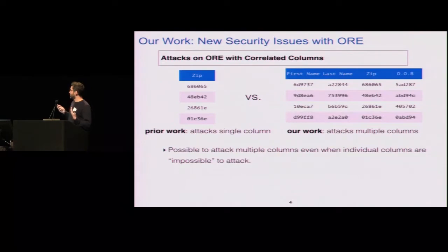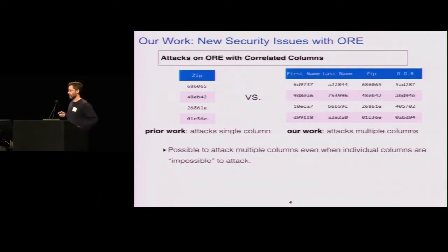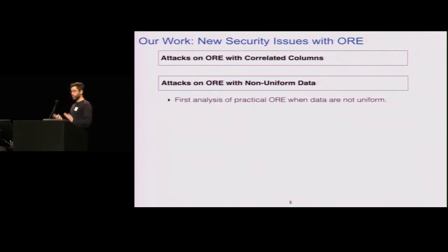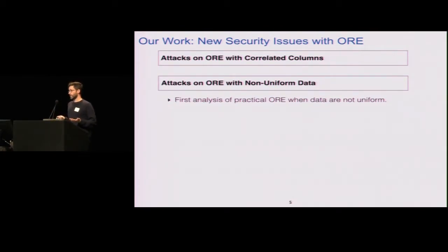In particular, we show that even when one column is sort of impossible to attack in some sense, having multiple columns there might enable an attack anyway. The second part looks at attacks on order-revealing encryption on non-uniform data. ORE has been studied mostly from a theoretical perspective with provable security theorems, and several of those theorems assume that the input data are uniformly random, mostly for theoretical convenience. We experiment to see how that mismatches with the behavior of ORE on non-random data, which is typically what you would want to encrypt.